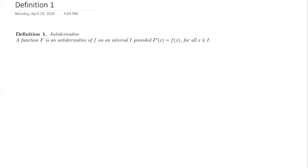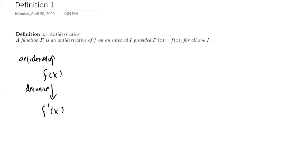You can see that in a way we're going backwards. Usually we would start with little f and find its derivative. Now we're starting with f and looking for a function whose derivative equals f. So we have f(x), we can take the derivative and get f′(x); or we can go the other way by taking an antiderivative and get big F. The relationship is: the derivative of big F equals small f. You can either take the derivative of f to get f′, or find a function whose derivative equals f.